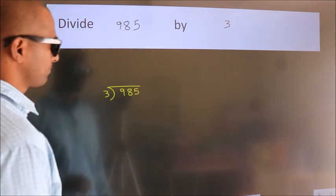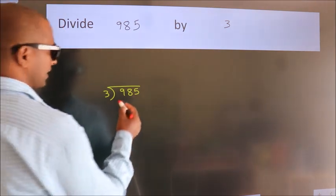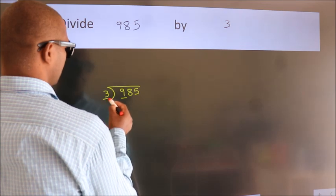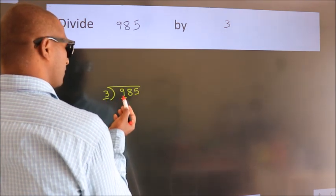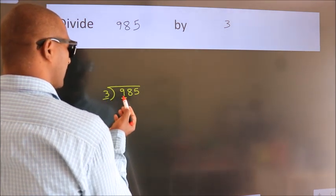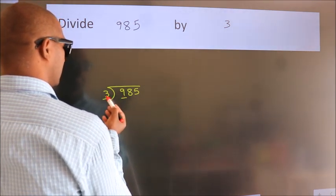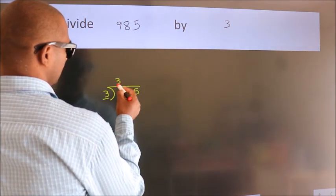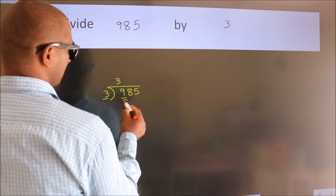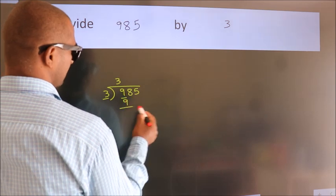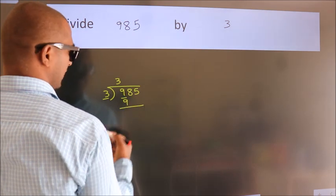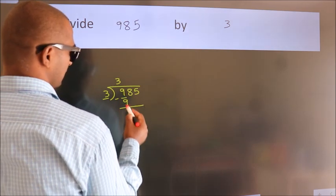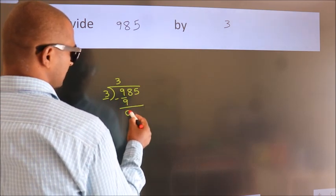Next, here we have 9, and here 3. When do we get 9 in the 3 table? 3 threes are 9. Now we should subtract. We get 0.